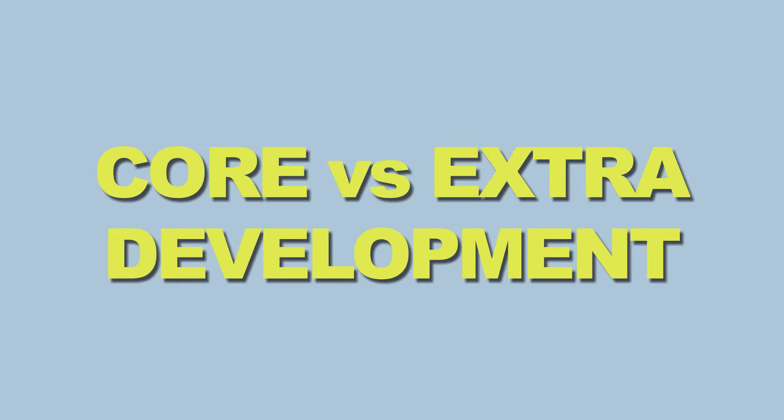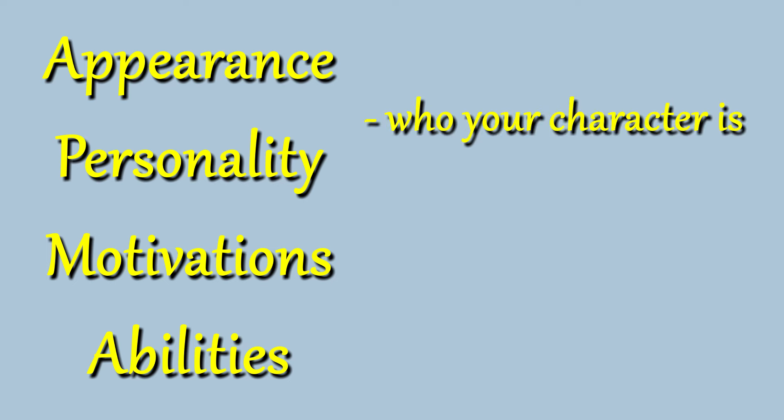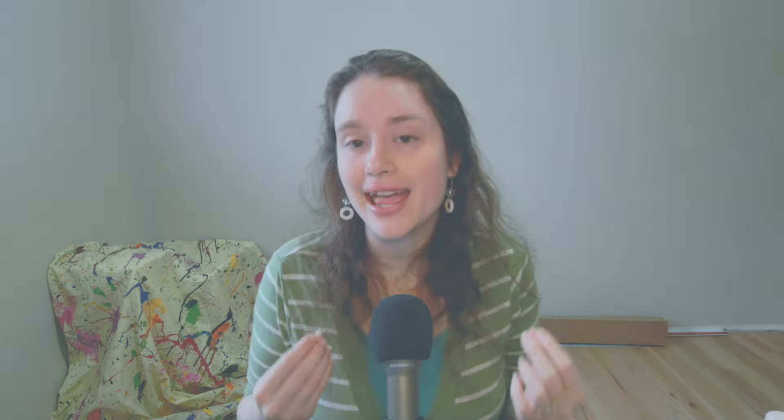I've noticed that there are certain developments that are the foundation for a character — I call them core developments. These are things like their appearance, personality including moral ethics, motivations including goals, and abilities — both strengths and weaknesses, be they physical, mental, magical, whatever. This defines who your character is, what drives them, and how they overcome obstacles. The writer and audience both need this information to be well executed in order to even have a character, as opposed to a plot device or a Mary Sue.